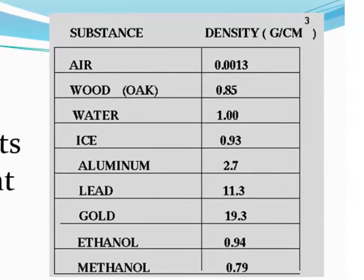We do have some mixtures here — air is a mixture, and wood would definitely be a mixture also. The rest are pure substances. Notice that for several of the solid substances — aluminum, lead, and gold — their densities are much higher than that of water: 2.7 for aluminum, 11.3 for lead, and 19.3 for gold.